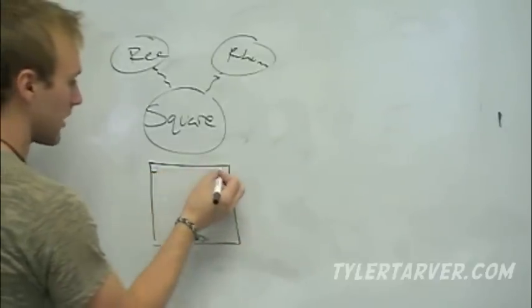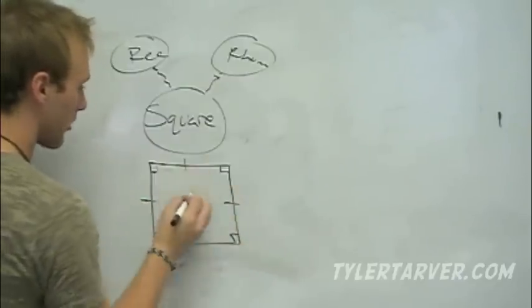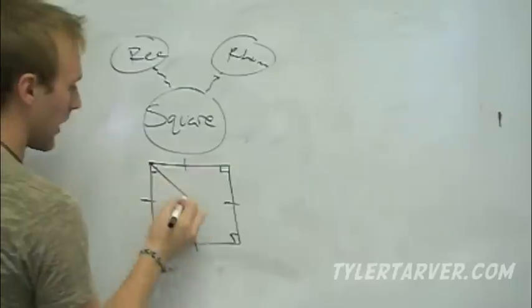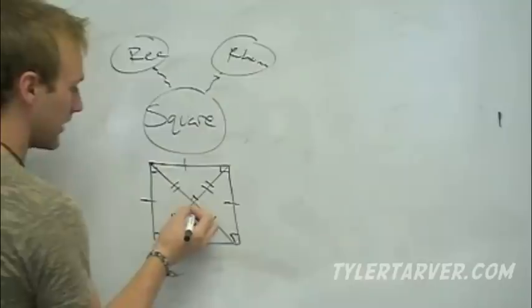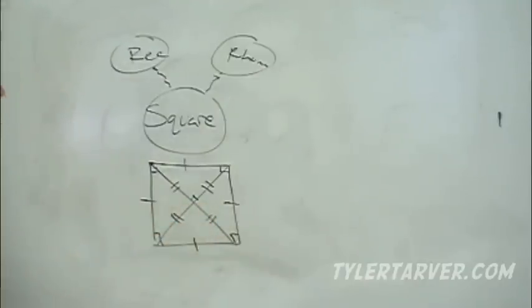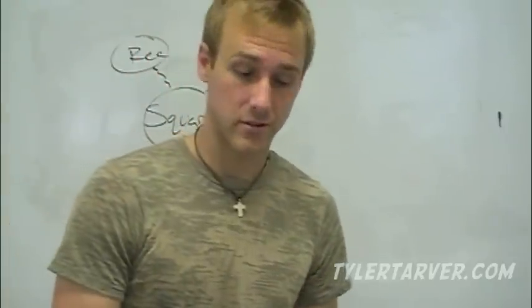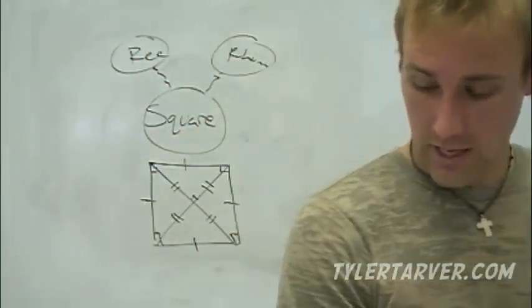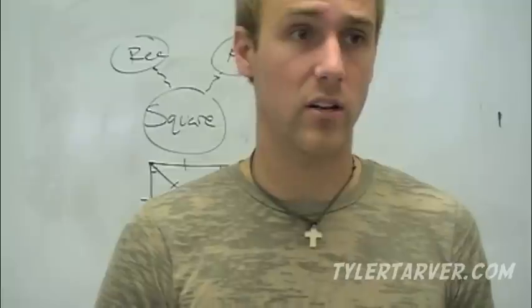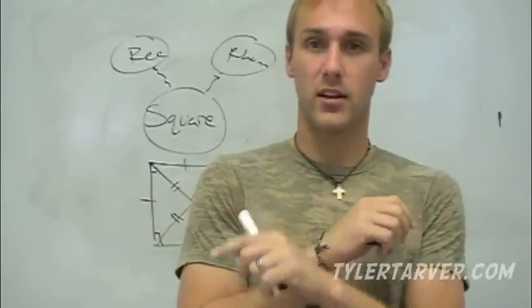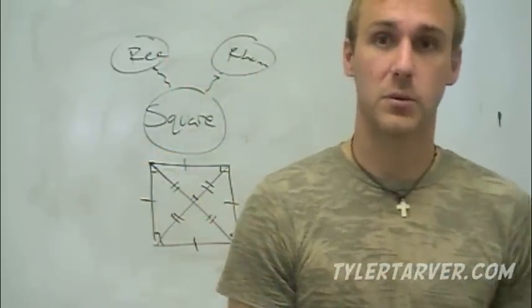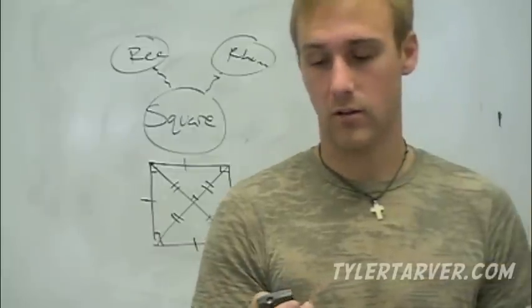A square has all 90-degree angles like a rectangle, all sides are congruent like a rhombus, the diagonals are angle bisectors so all those triangle angles are the same, and the diagonals are all 90 degrees inside. For most of this section you'll probably need to use a coordinate plane — they'll give you a shape on a graph and you have to use the distance formula to find if sides are congruent, and slope to find if lines are parallel or perpendicular — remember slopes switch sign and flip for perpendicular lines. Distance formula, perpendicular slopes, and midpoint — that's pretty much it.